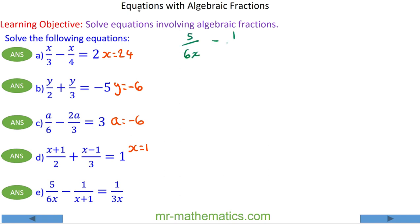And finally for question e we have 5 over 6x minus 1 over x plus 1 is equal to 1 over 3x. There's a couple of ways of doing this, but I think I'm going to move each denominator in turn. I'll begin with multiplying every term by 6x.